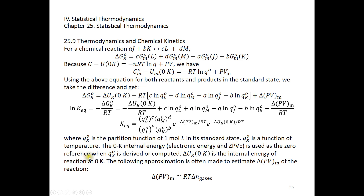This is used as a reference when the partition function is derived or computed. When deriving the vibrational and electronic partition functions, we use the energy of the ground electronic state as the zero-reference and the zero-point vibrational energy as the zero-reference. The 0K internal energy of the reaction is just the difference between the products and reactants.